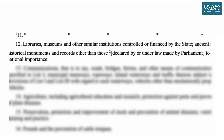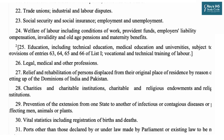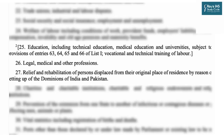Looking at the concurrent list — List 3 — entry 25 talks about education, including technical education, medical education, and universities, subject to the provisions of entries 63, 64, 65, and 66 of List 1, as well as vocational and technical training of labor. So power dealing with education has been given both to the center as well as the state. Entry 26 talks about legal, medical, and other professions — allowing both center and state to take necessary steps for development of these professional fields.